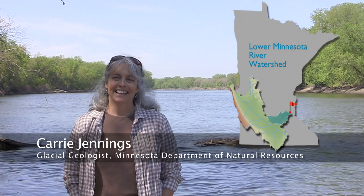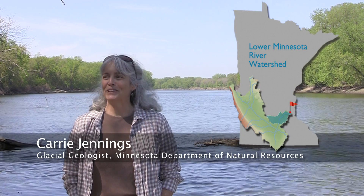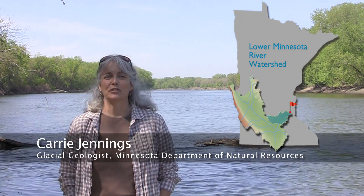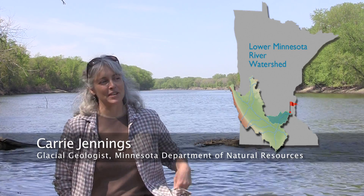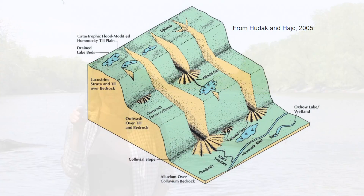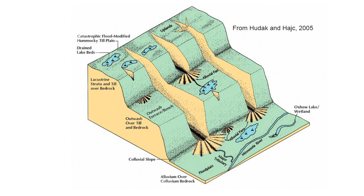What is a nick point? We couldn't even agree on how to spell it among us at the beginning — some people use a K, some people just start with an N. But it's basically any break in slope in a river. And if you're in a canoe, you would say rapids or waterfall; it's something you probably would portage around.